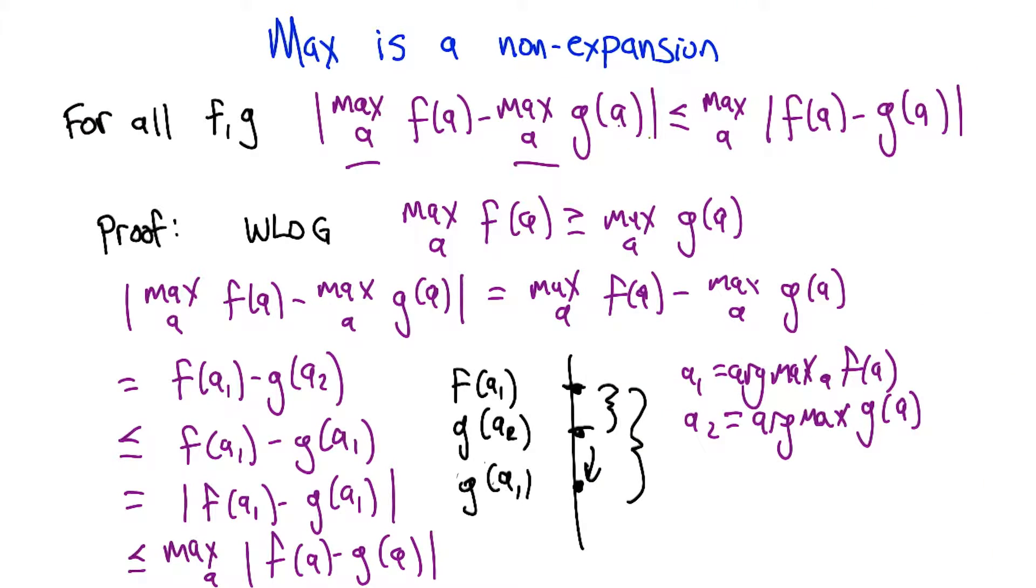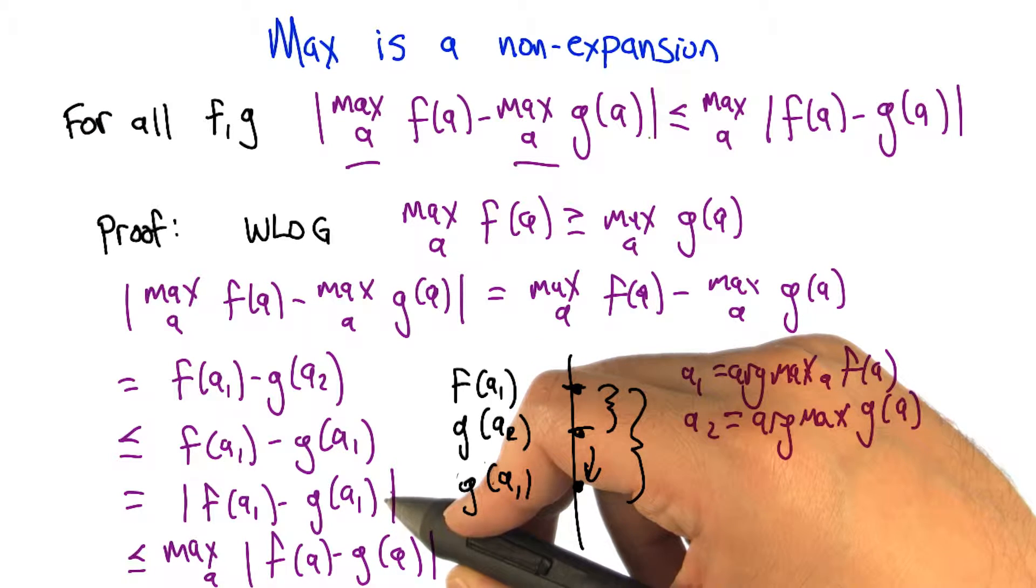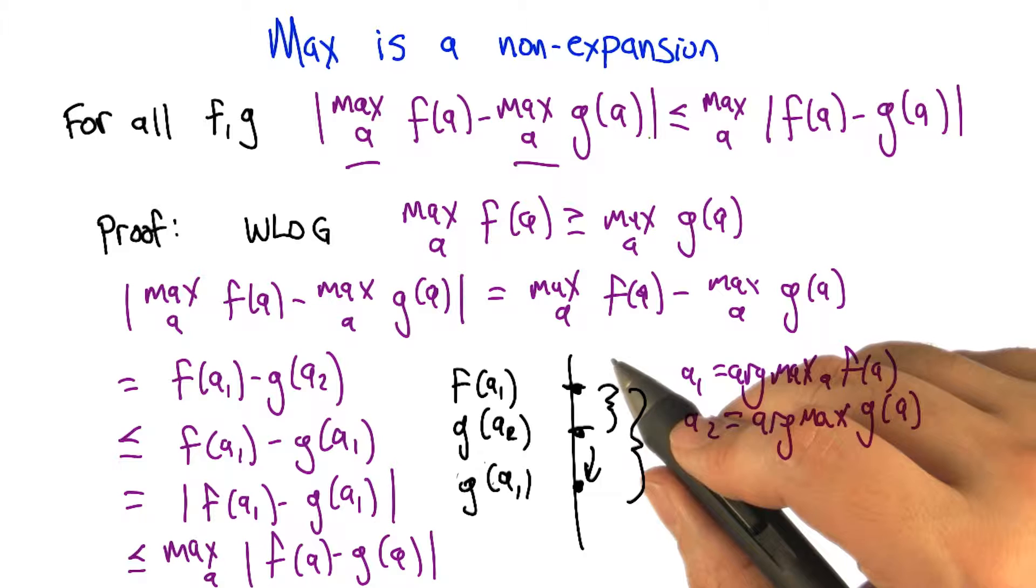Okay, so let me just say that last thing back to you to make certain I got it. So I'm with you all the way to f of A1 minus g of A1. You went to the absolute value signs. That's pretty easy because we already knew that value was positive, that difference was positive by construction.